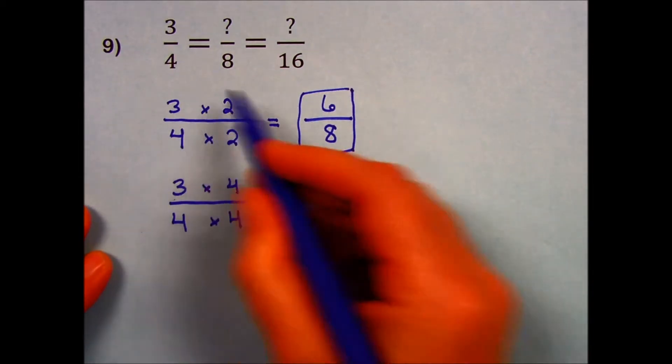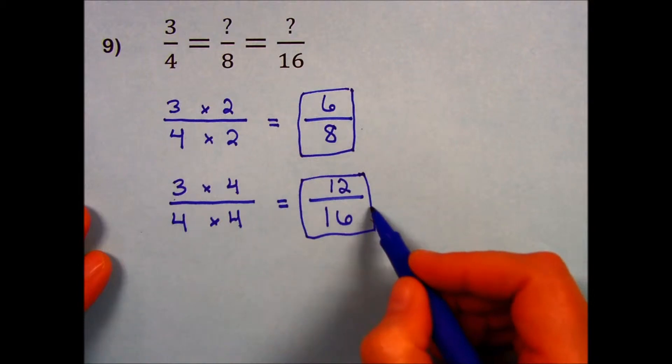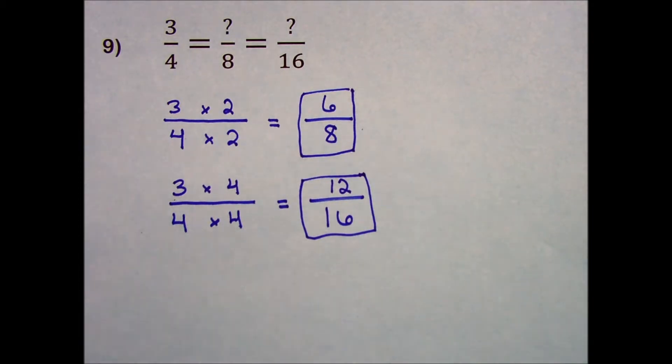So 3/4ths, 6/8ths, and 12/16ths are all equivalent fractions. I would like to illustrate this also using a number line.